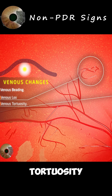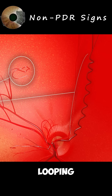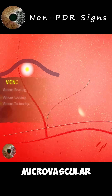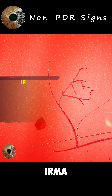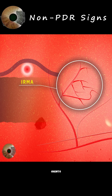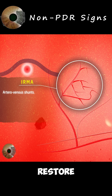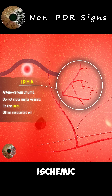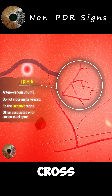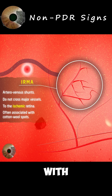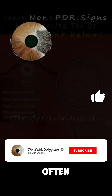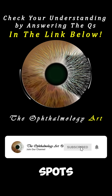Venous tortuosity and venous looping may also be seen. Intraretinal microvascular abnormalities, or IRMA, are arteriolar-venular shunts bypassing the capillary bed as an attempt to restore oxygen supplementation to the ischemic areas, but they never cross major vessels. This sign represents moderate to severe disease with ischemic event and is often associated with cotton wool spots.